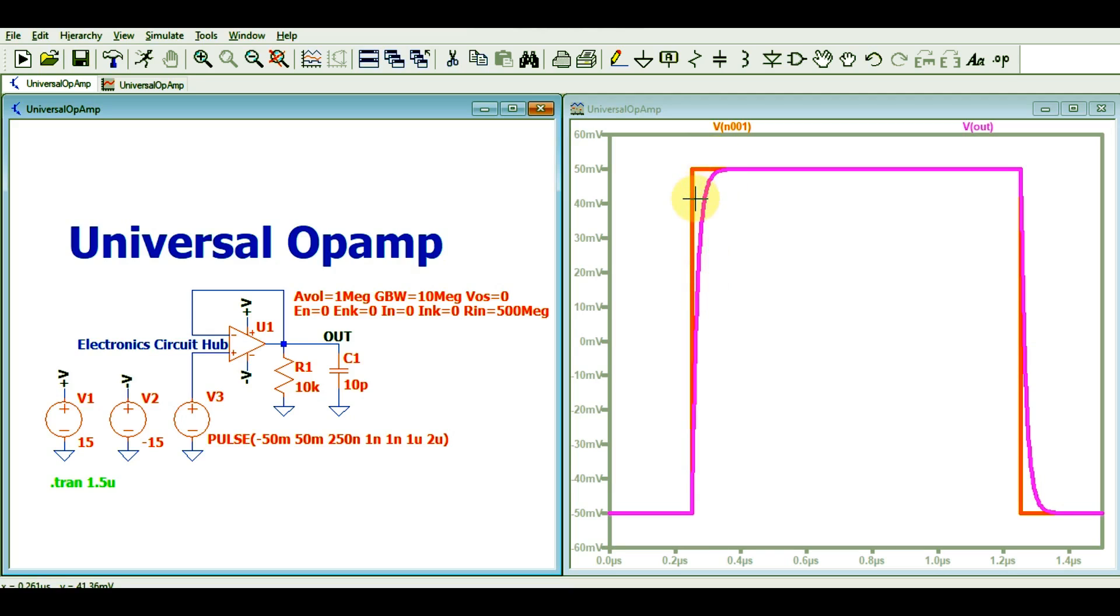So you can see here, your output signal is not exact the replica of your input signal, that means here the impact of slew rate comes into the picture. Because of this slew rate, your output signal is from here, it is not following the input signal.